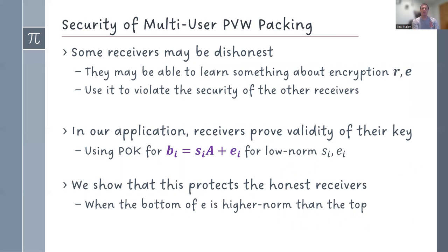The one thing that I still need to tell you about is security. Security in PVW was proven in the regular model where a single party holds the entire secret key, but here we have a different setting. I have my own secret key, and I may be dishonest. So maybe using my secret key, I can learn things about the encryption randomness that will allow me to attack the encryption for others, and we need to analyze that. Turns out in our application, that's not really a problem. The reason is because our application anyway requires all the parties to prove that they generated the key correctly, which means I need to prove that the b_i that I broadcast was indeed obtained as s_i times A plus e_i, where s_i and e_i are small norm vectors, and I'm going to use a proof of knowledge for that.